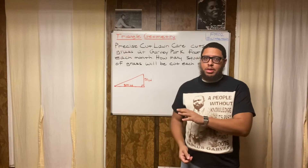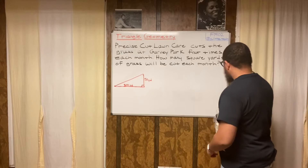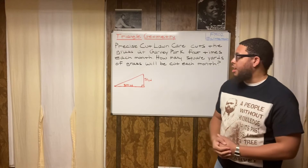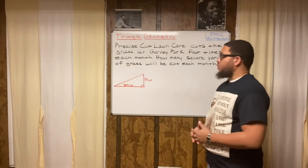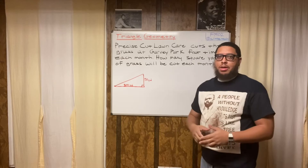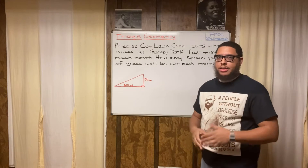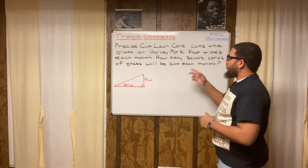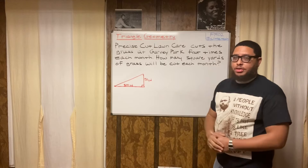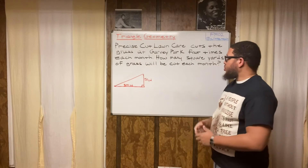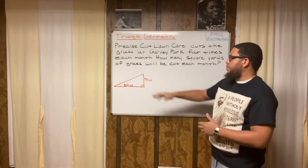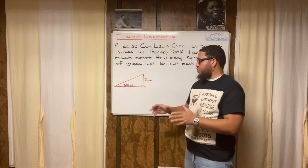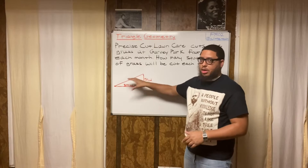We're dealing with triangle geometry in a word problem. The problem is about Precise Cut Lawn Care, which is an actual business located in Baltimore — they handle lawn care, snow removal, anything like that. The park they service is called Garvey Park, and this triangle represents the aerial view of the park. The park is shaped like a right triangle. They cut the grass four times each month.